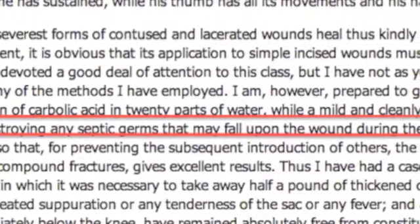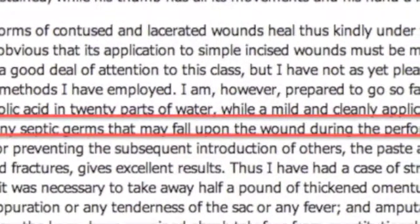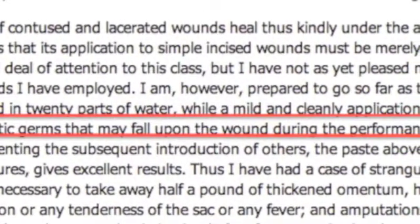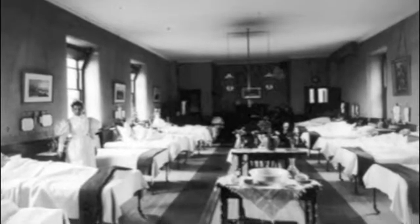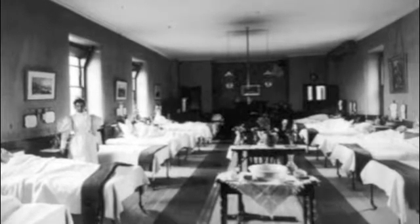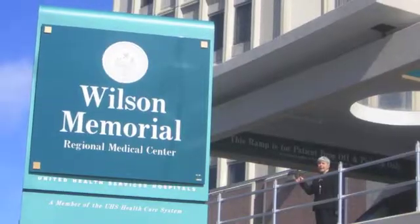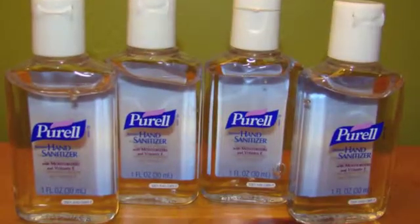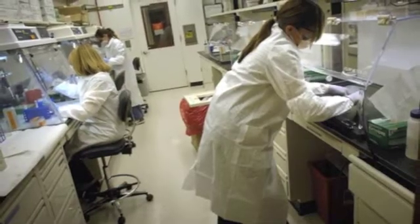Lister called for the use of carbolic acid to disinfect instruments as well as the cleaning of hands between operations. He also claimed a solution of carbolic acid in 20 parts of water, 'while a mild and cleanly application, may be relied on for destroying any septic germs that may fall upon the wound during the performance of an operation.' He saw hospitals as hygienic, sanitized places as we know them today. Overall, his advanced ideas of hygiene and sanitation in hospitals, as well as the use of antiseptics to kill germs and prevent disease, were revolutionary. His implementations of the germ theory helped kick off the modern age of medicine.